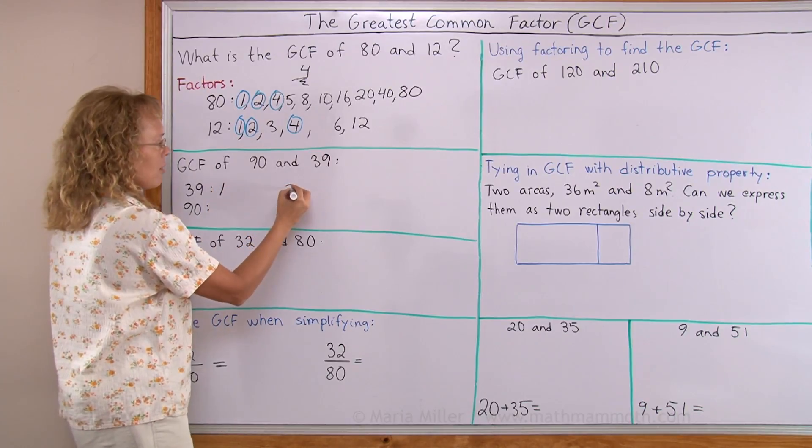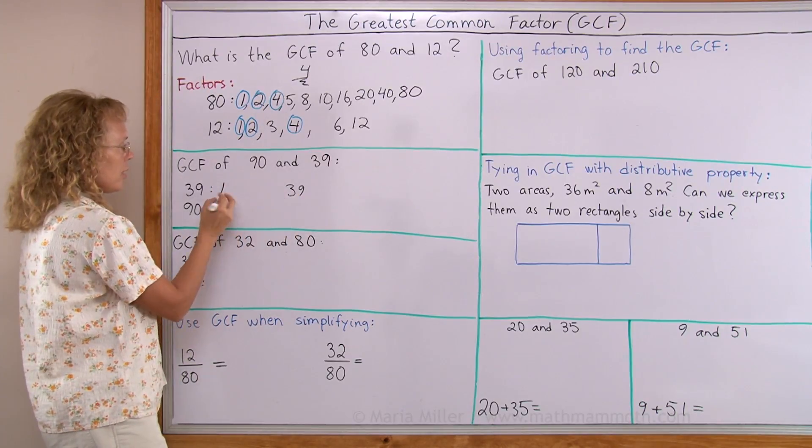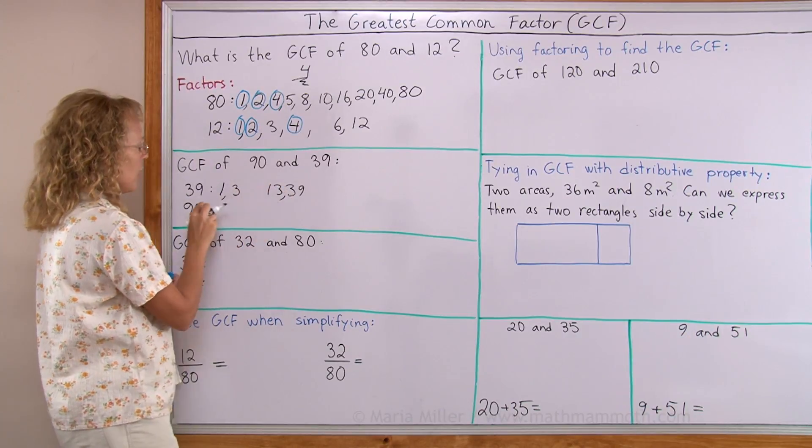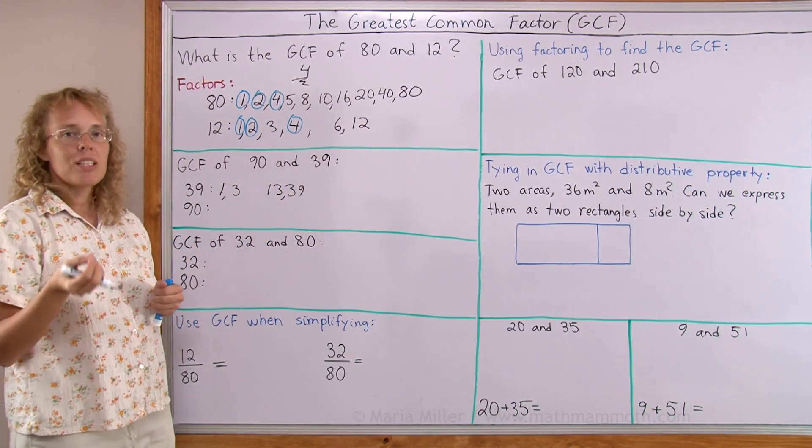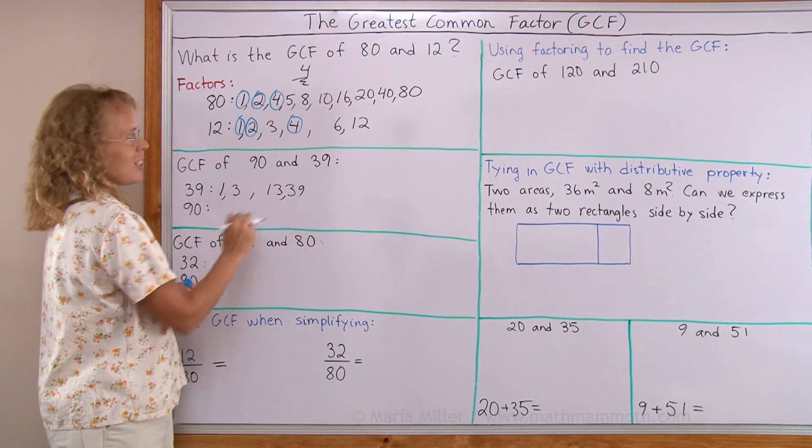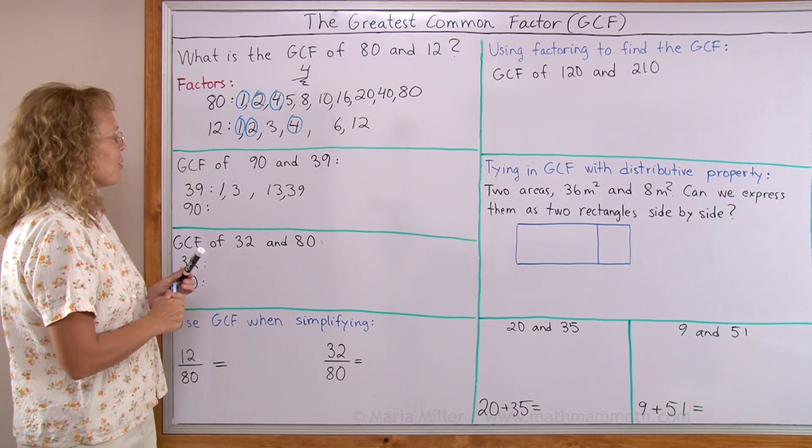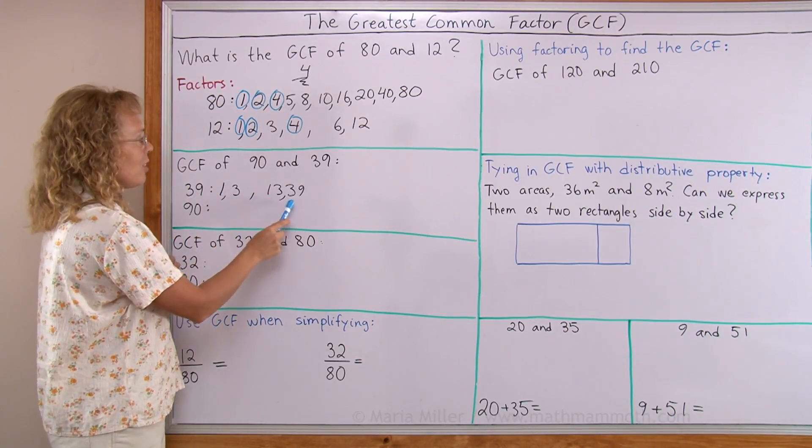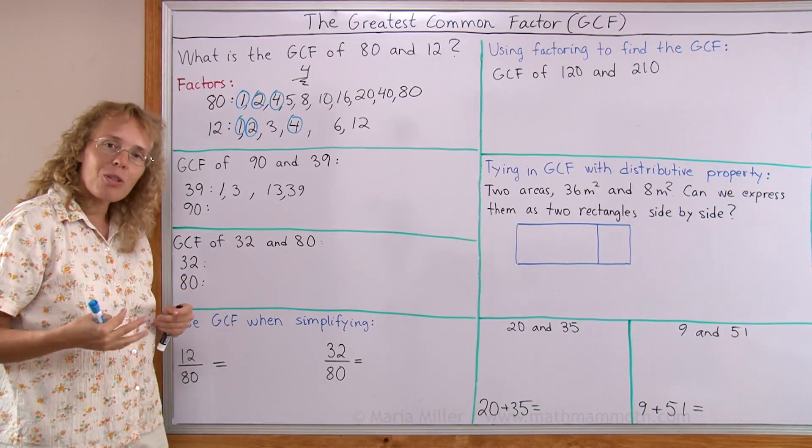39 is 1 times 39. Then it's not 2 times anything, but it is 3 times 13. And then it's not 4 times anything, or 5 times, or 6 times, or 7 times. Those are all its factors. And now, the greatest common factor of these two numbers is either 1, or 3, or 13, or 39, right? It's going to be one of those.